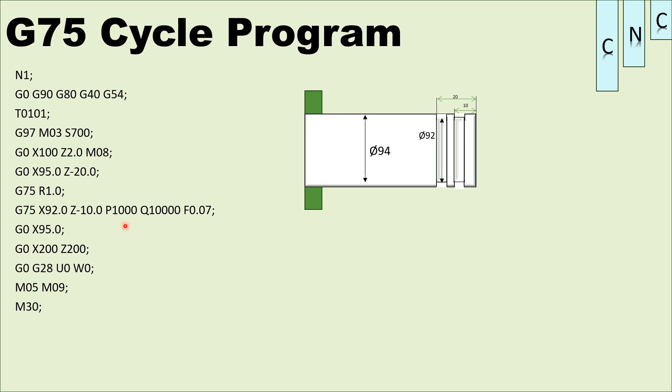So there are limitations to the G75 cyclic program. The X values remain the same, so there are certain limitations to how the cycle can be applied.